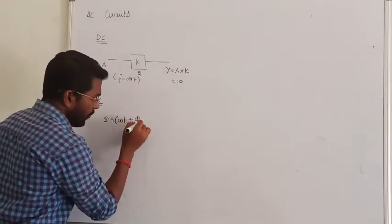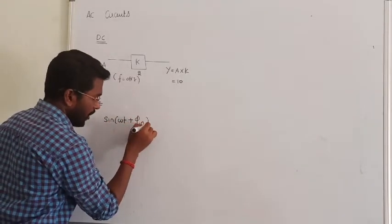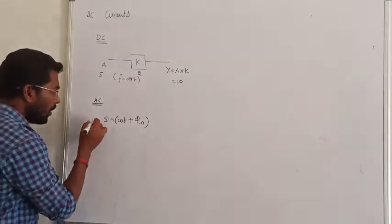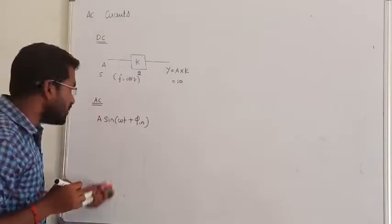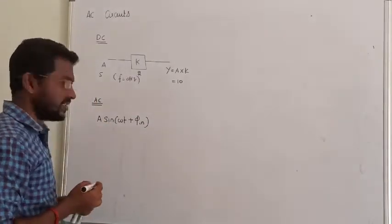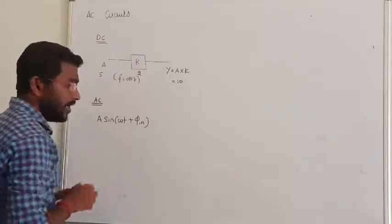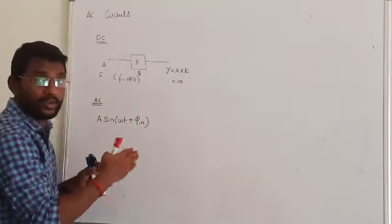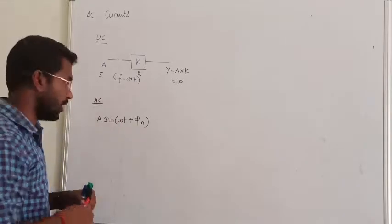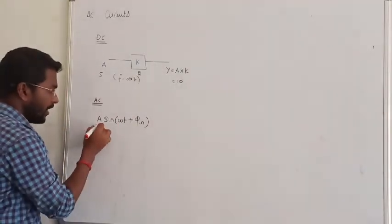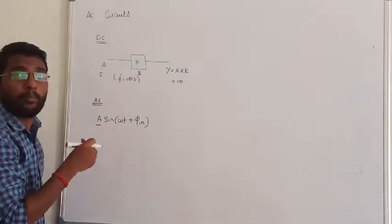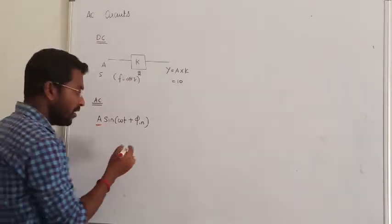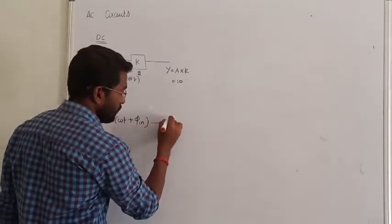It is also some input signal we have to consider — that is the input phase angle, with some magnitude. This is the general representation of an AC signal. This is the initial phase angle, and this is the maximum value of the sinusoidal signal. So let me pass it through a system.